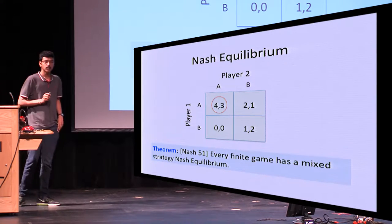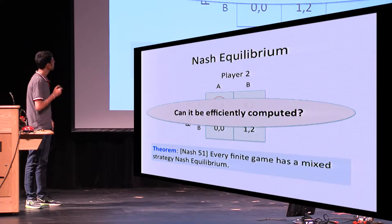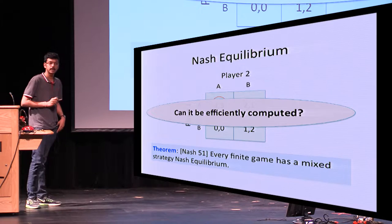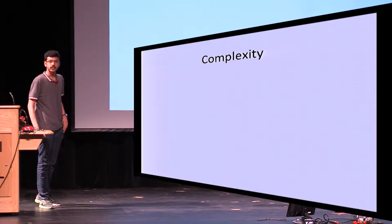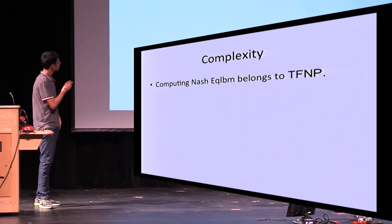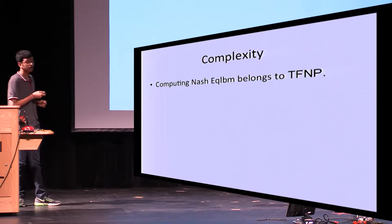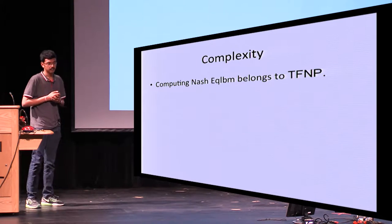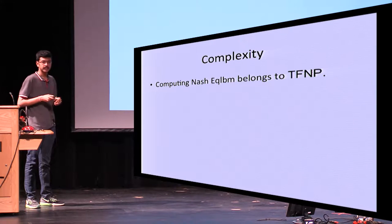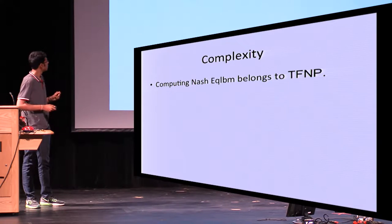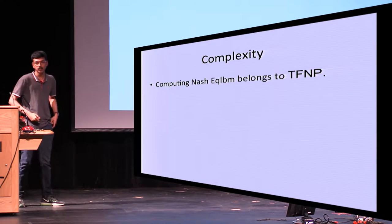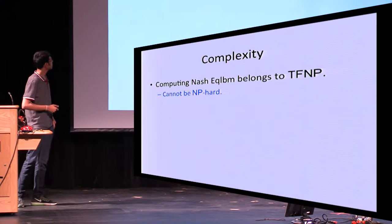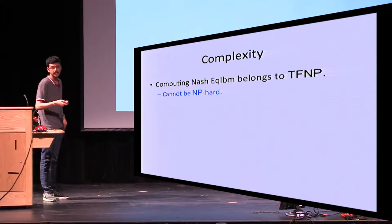A question that has intrigued complexity theorists for a very long time is: given a game, can Nash Equilibrium be efficiently computed? A theorem of Nash proves that Nash Equilibrium belongs to the complexity class TFNP — the set of all NP search problems where every instance is guaranteed to have at least one solution. This puts Nash Equilibrium in TFNP, and a consequence is that it cannot be NP-hard unless NP equals co-NP.